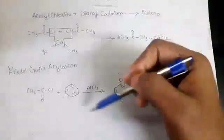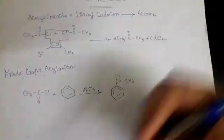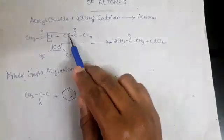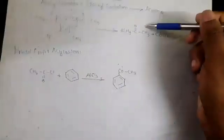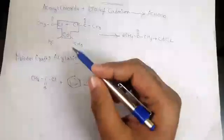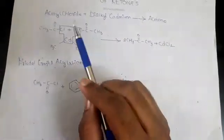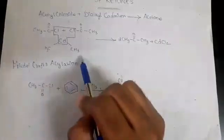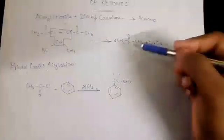How will you prepare straight chain ketones? By reacting two moles of acetyl chloride with one mole of dialkyl cadmium. Next, we can see the physical properties.